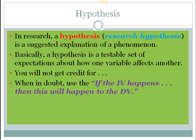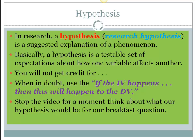When you're creating a hypothesis and not quite sure how to word it, you can always use this universal hypothesis statement: if the IV happens, then this will happen to the DV — an if-then statement. For example: if we use Cornell notes when watching our AP videos, then we will score higher on the test. So using Cornell notes is our IV, and scoring higher is our DV. Now stop the video and think about what the hypothesis would be for our nutritious breakfast question before moving on.